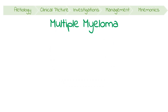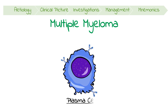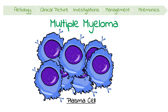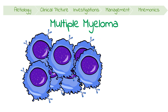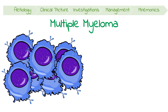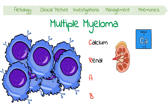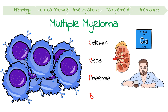Multiple myeloma is a hematological malignancy affecting plasma cells, resulting in their uncontrolled proliferation. It typically presents with CRAB symptoms including high calcium levels, renal impairment, anemia and bone pain.